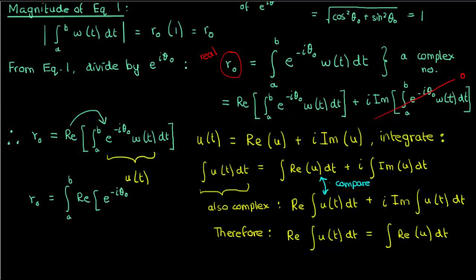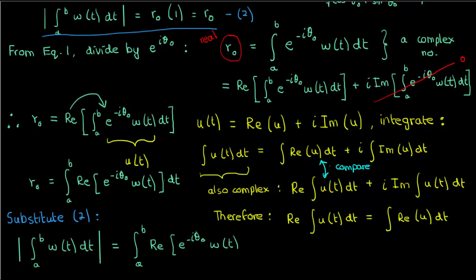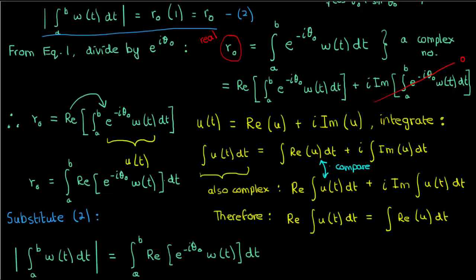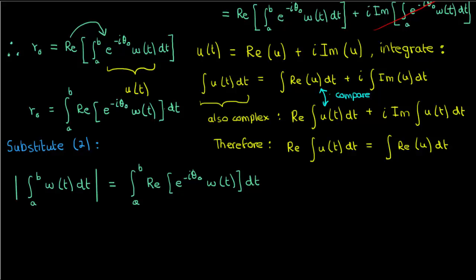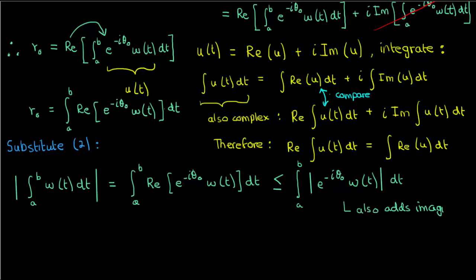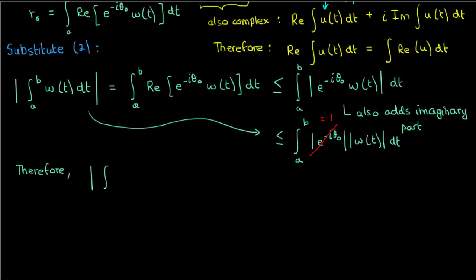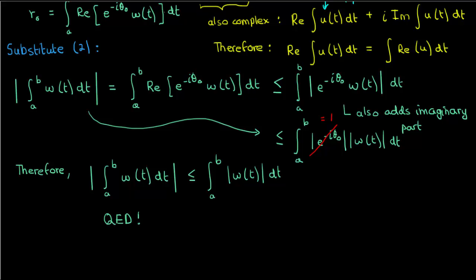Let's use this to go back to the expression for r naught and move the real part back inside the integral, since we've just shown we're allowed to do that. Now substituting the magnitude of the integral of w back in place of r naught, and because we're integrating on a real interval where a is less than b, the integral of the real part of e^(−iθ₀)·w(t) is less than or equal to the integral of the magnitude of e^(−iθ₀)·w(t). Since the magnitude of the exponential is just 1, we conclude that the magnitude of the integral from a to b of w of t dt is less than or equal to the integral from a to b of the magnitude of w of t dt — which is exactly what we wanted to prove.